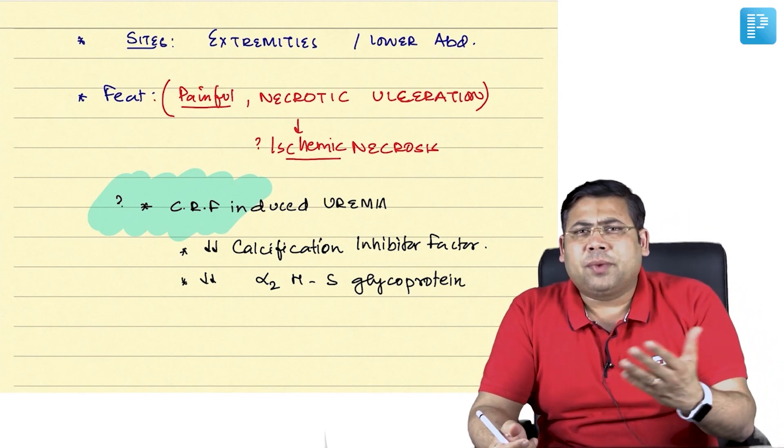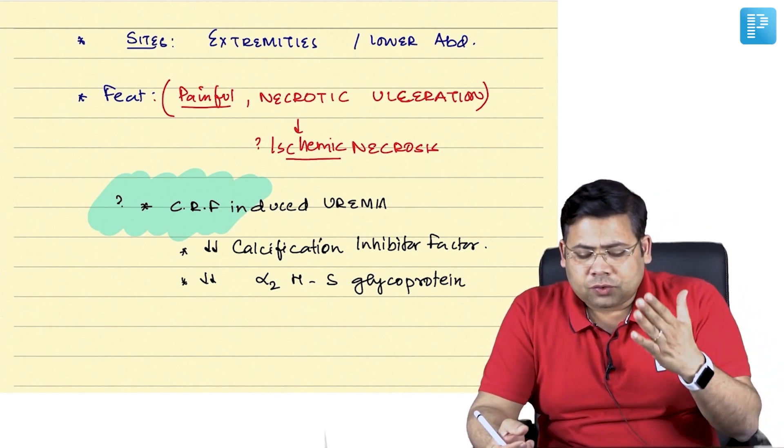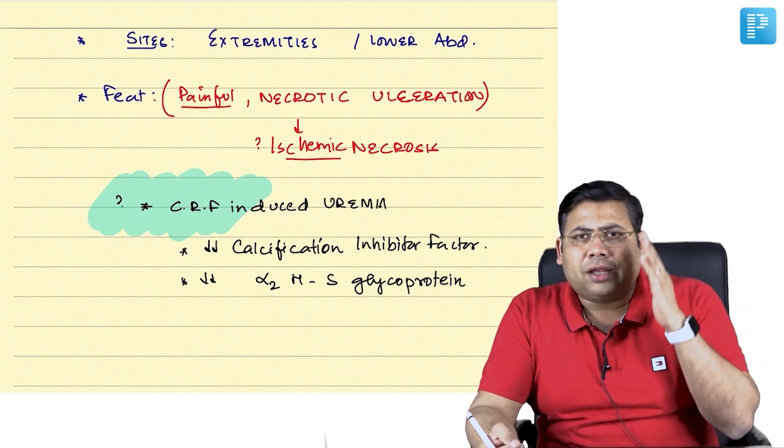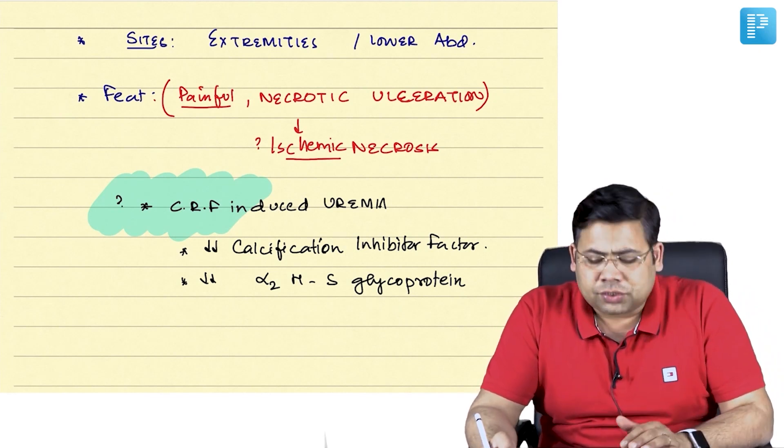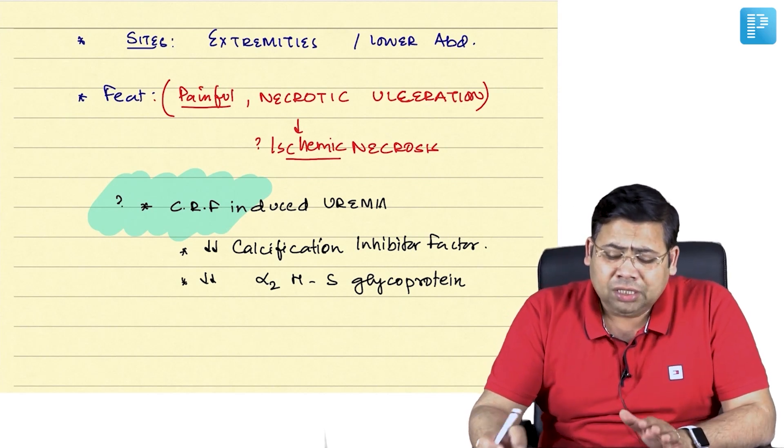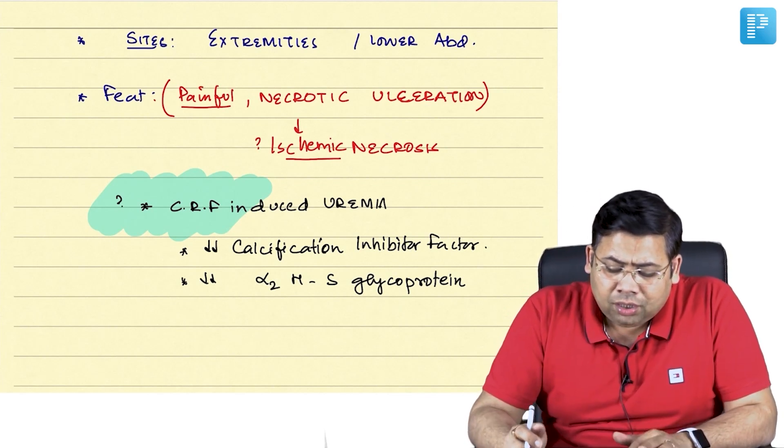It is also known as Herrimans Schmitt. So alpha-2 Hs glycoprotein, if there is deficiency, it will again promote the calcification. So these two are important reasons for calcification.